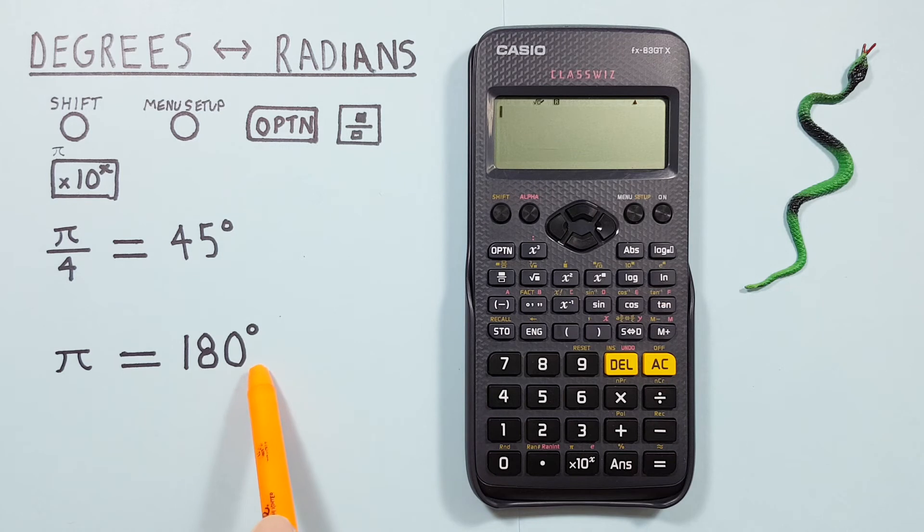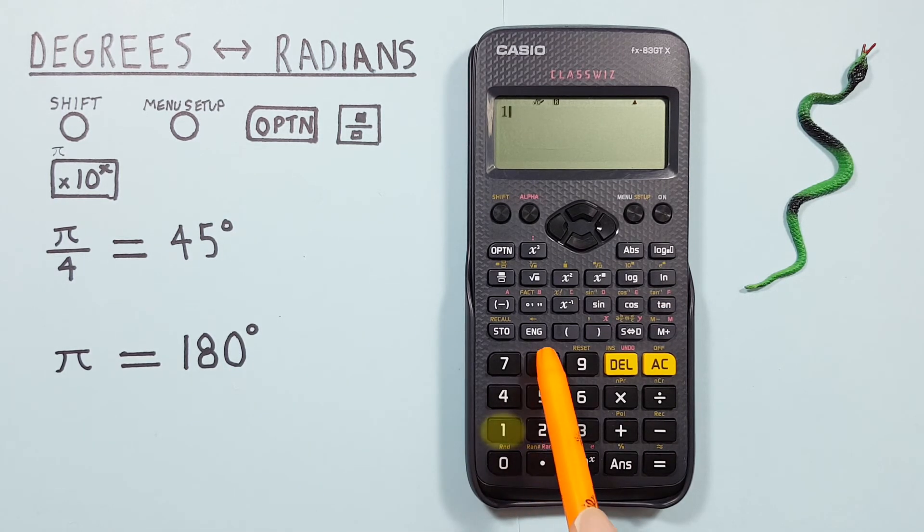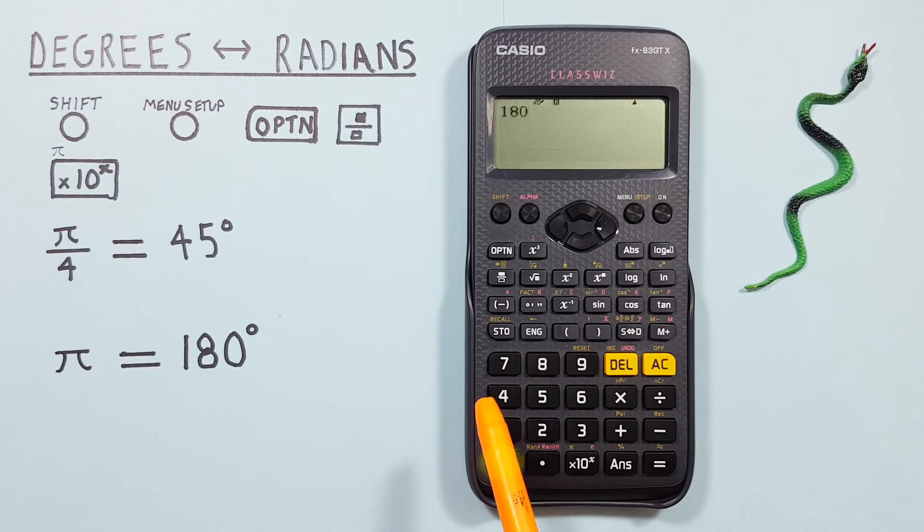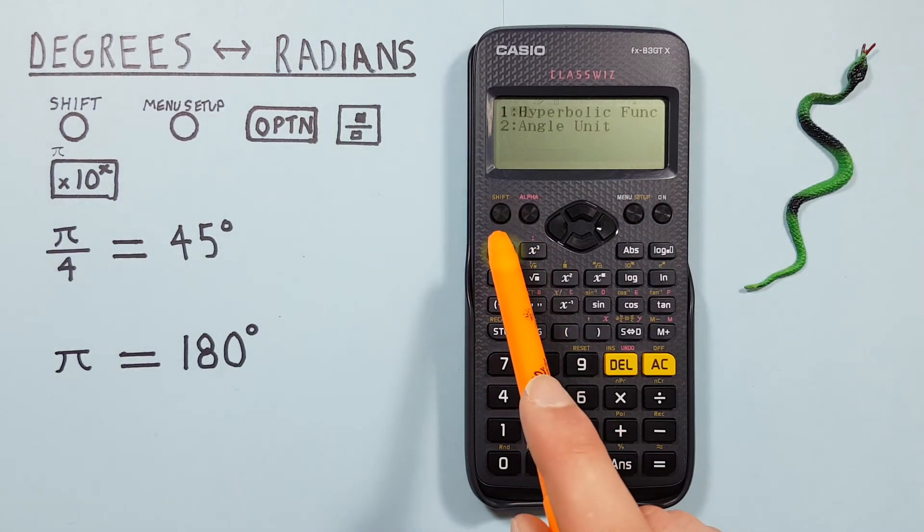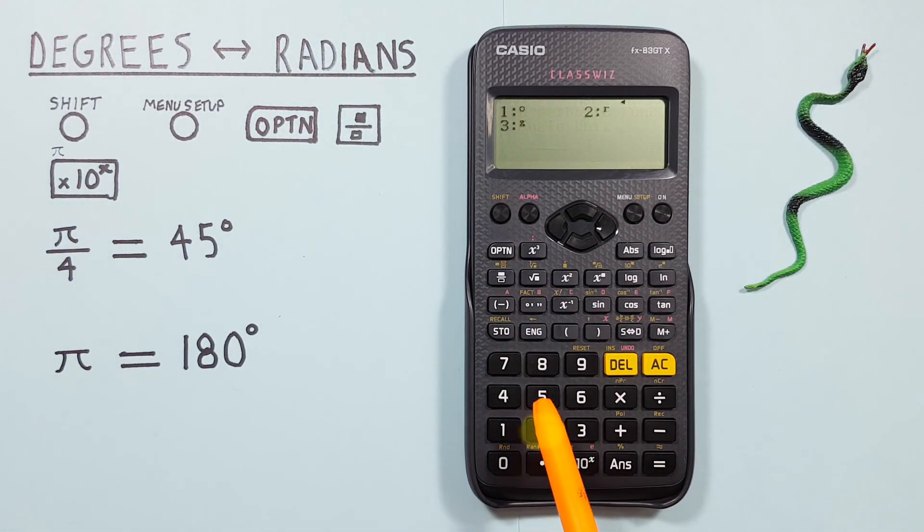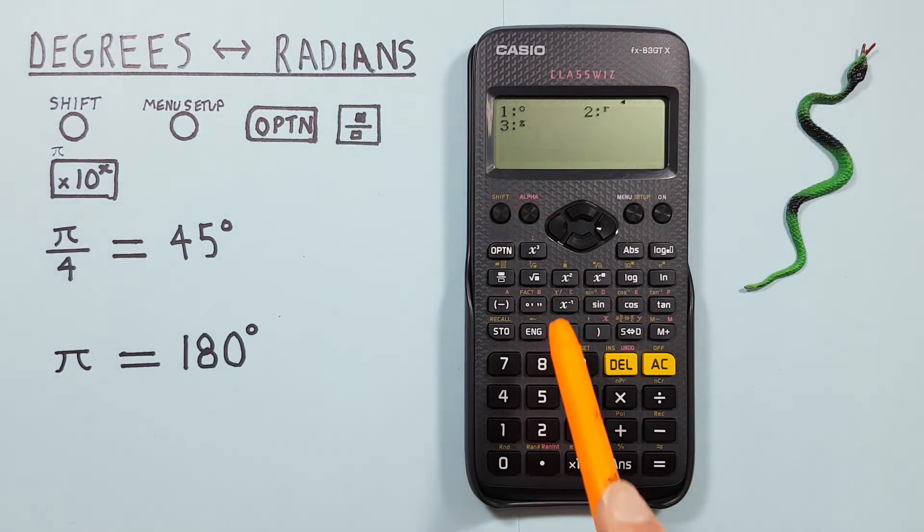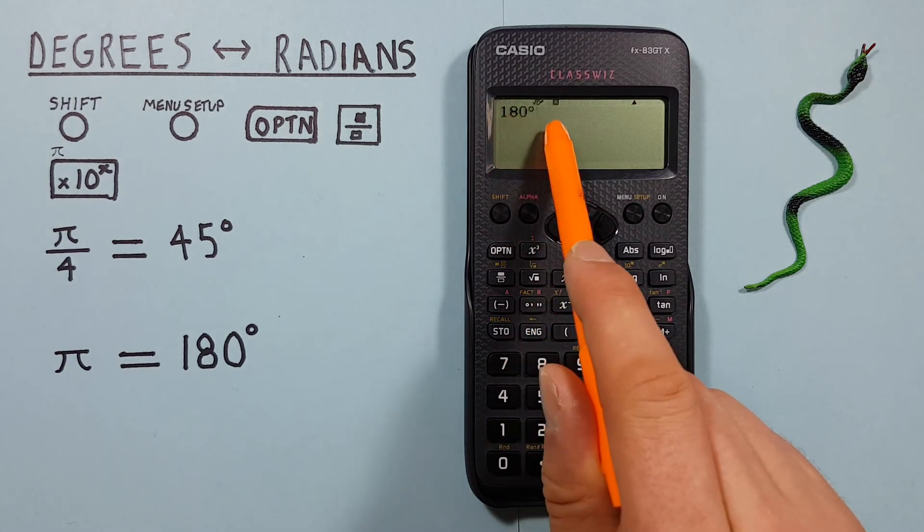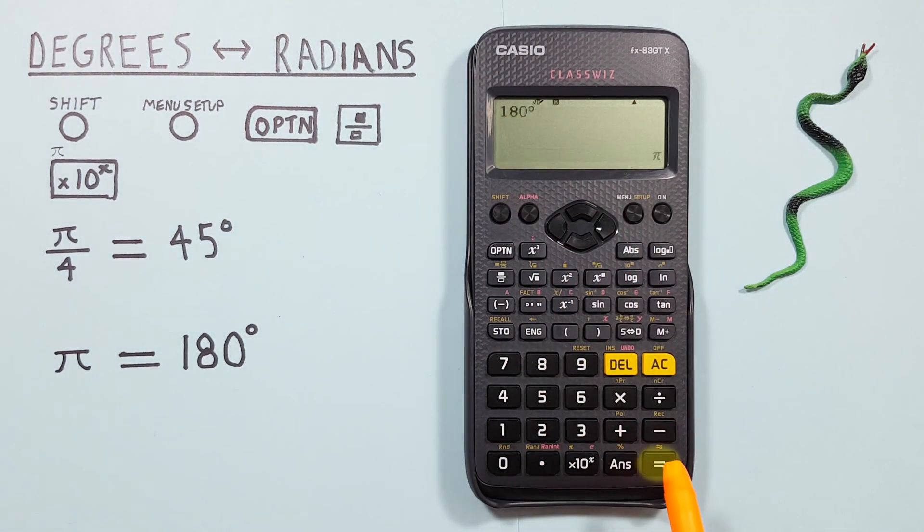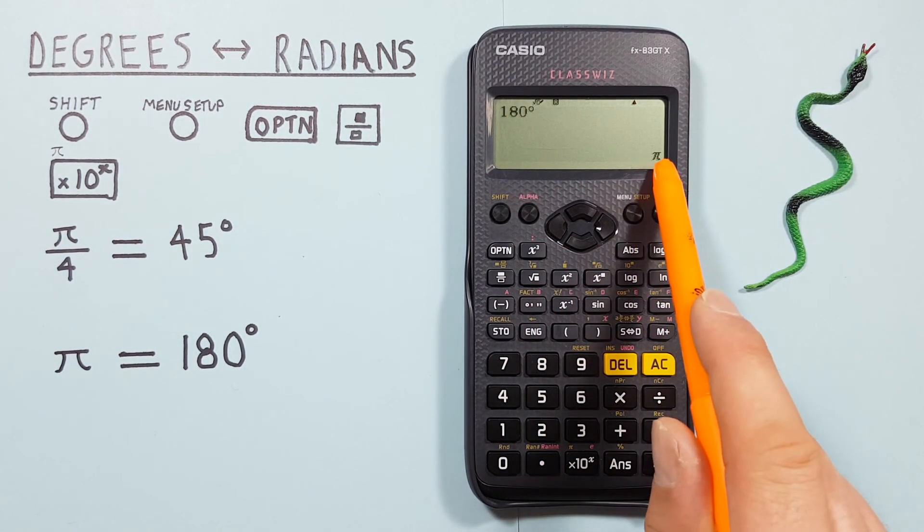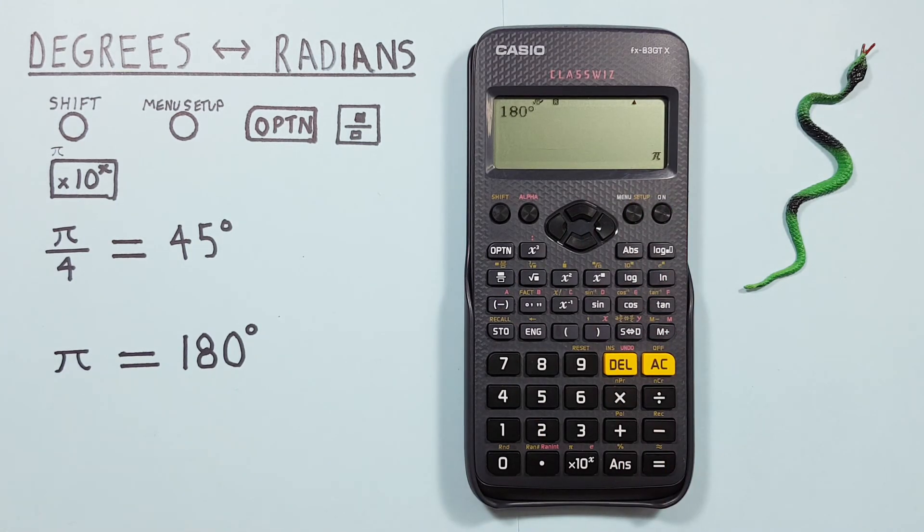And if we add 180 degrees and want to convert that to radians, we do the same thing. Enter the 180, press Option, Angle Units, tell our calculator this is a degree, so number 1, there we go. 180 degrees equals π. Yep, that checks out.